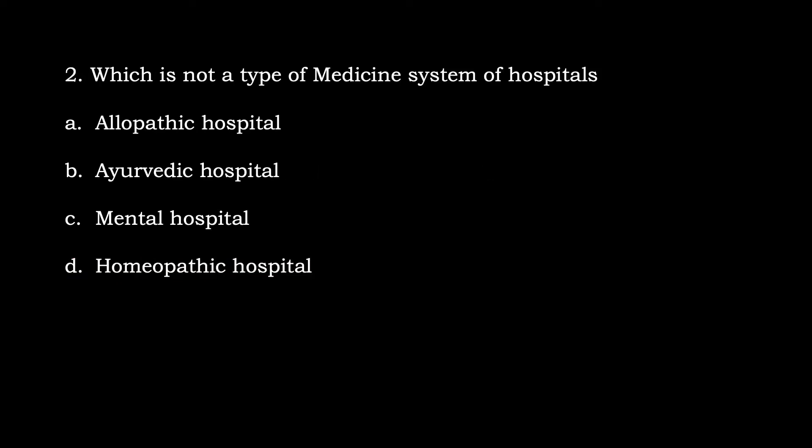Question number two: Which is not a type of medicine system of hospitals? This question comes from the classification of hospitals. The options are: A) Allopathic hospital, B) Ayurvedic hospital, C) Mental hospital, D) Homeopathic hospital. The correct option is C, mental hospital.